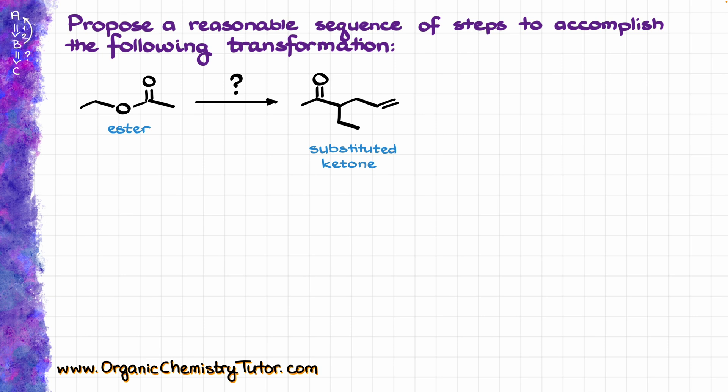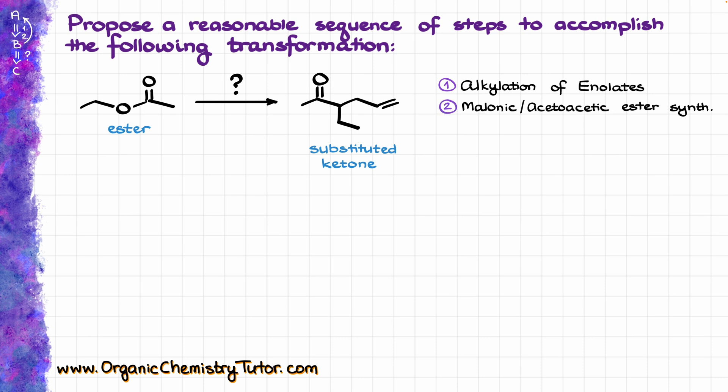and we are going to be making a couple of new bonds — there's a new bond over here and a new bond over here — most likely what we are going to be looking at is either the alkylation of enolates or potentially some sort of the malonic or acetoacetic ester synthesis, which is another version of the alkylation of enolates but with a twist.